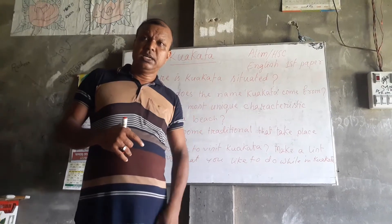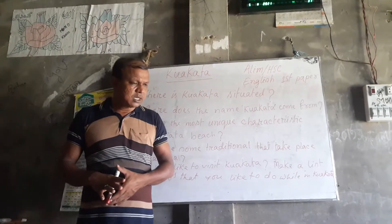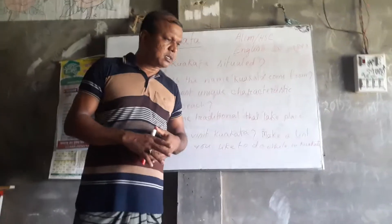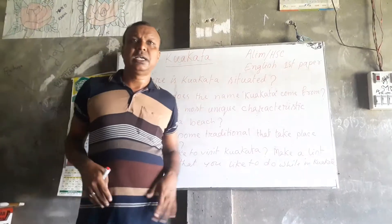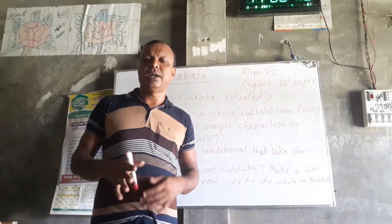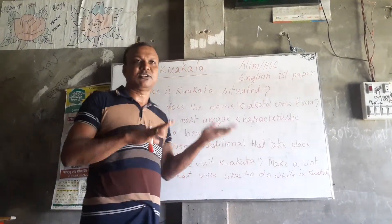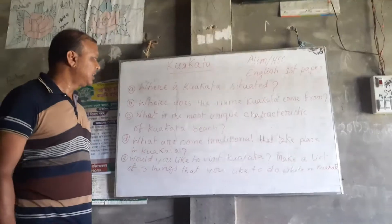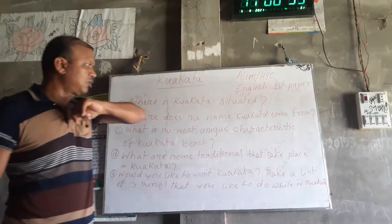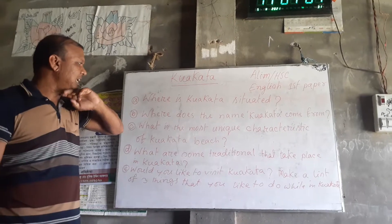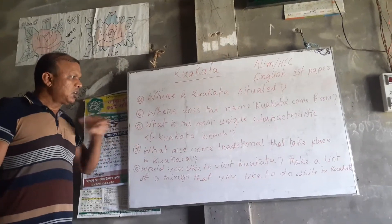We also commonly say 'kuwa', and the English name for kuwa is 'well'. That well was dug on the seashore of Kuwakata. That is why, according to that history, the name is Kuwakata — from kuwa, meaning well.